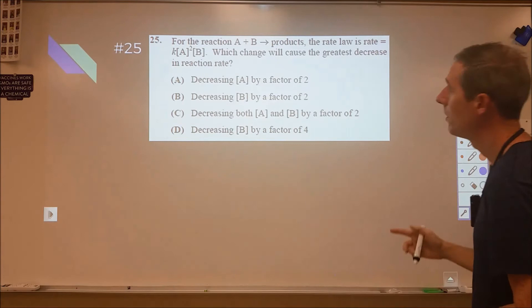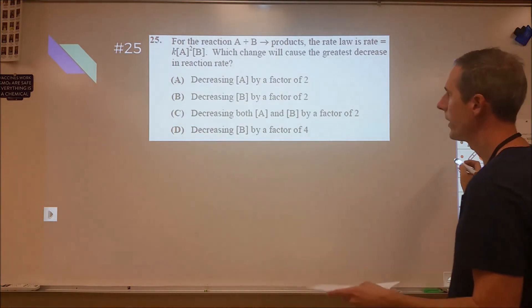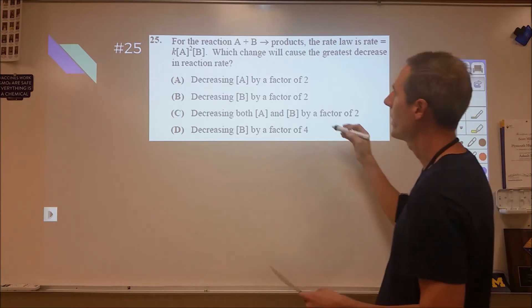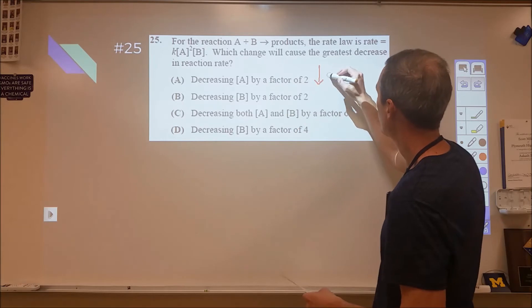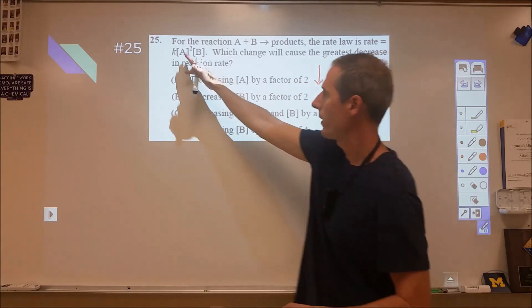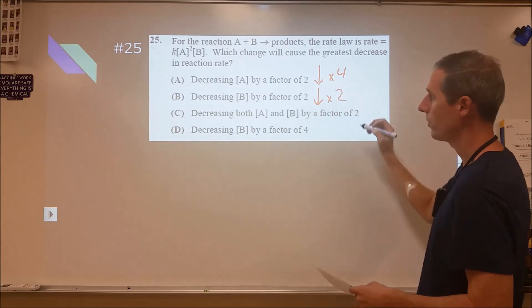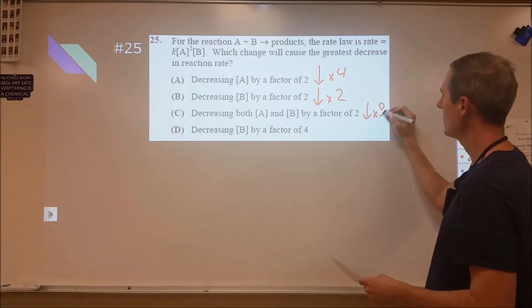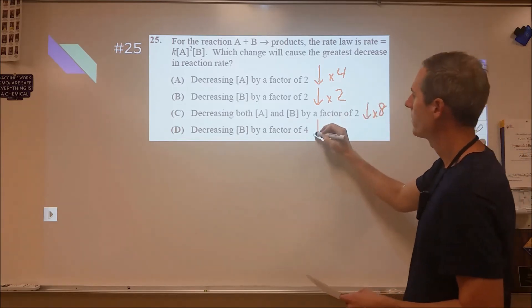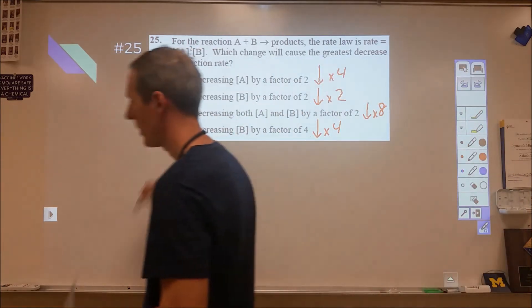Here we're given a rate law, which change will have the greatest impact in terms of decreasing the reaction rate. If we decrease A by a factor of two, that's going to decrease our rate by four because it's a squared effect. If we decrease B by a factor of two, that's going to decrease our rate by two. If we decrease both by a factor of two, we're going to drop it by four and then twice as much as that, so it's going to drop by eight. And if we decrease B by a factor of four, that's going to decrease by four. Pretty simple. C is our best choice.